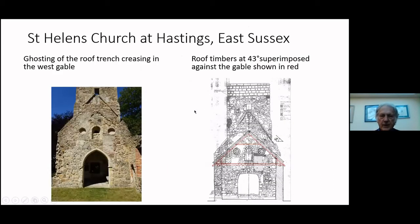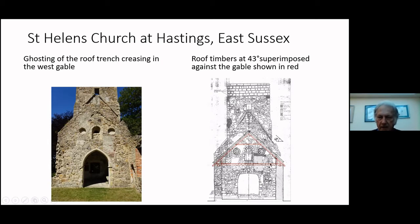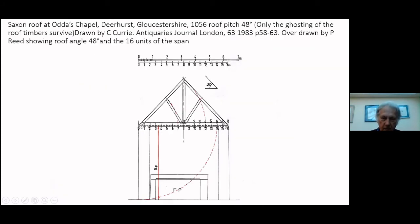This is St Helen's Church in Hastings — roof timbers of 43 degrees — I've shown that superimposed on the archaeological drawings. This is the trench or the creasing of the roof which survives, and the roof of 43 degrees fits snugly into those creasing. Not only that, the dimensions also set out the thickness of the walls. The wall thickness could be based on the carpenter's measurement — they have two units which might be measurements used for stone masons at ground level, but they got slightly thinner at the top.